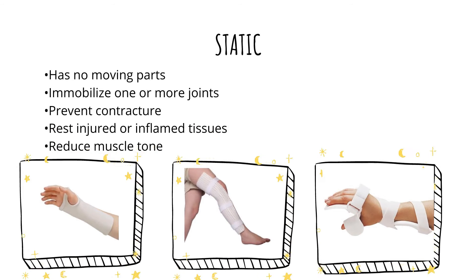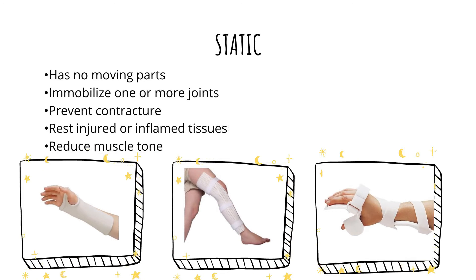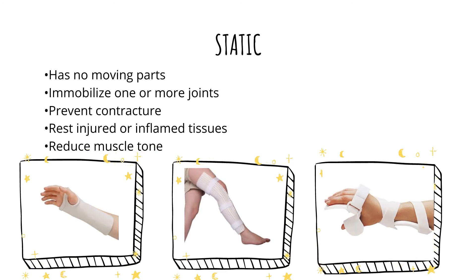The second category is the static orthosis. It has no moving parts. It immobilizes one or more joints, prevents contracture, rests injured or inflamed tissues, and reduces muscle tone. No adjustments will be done in this type of orthosis. Examples include the volar forearm-based static thumb hole-raised orthosis, the posterior static knee orthosis, and the volar forearm-based static wrist-hand orthosis.